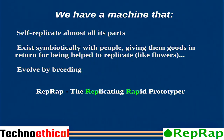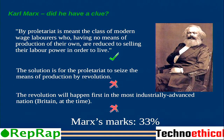Now we have a machine that is self-replicating in almost all its parts. Pretty much 50% of the RepRap should be replicable — printable. It exists symbiotically with people because it gives us goods, like a glass or a comb, and it evolves by breeding, because since it's free hardware we can modify it and make something new. The RepRap philosophy, if you read the page, is an example of Marxism — Marx got the first things right, but not the second, because we don't actually need another war.